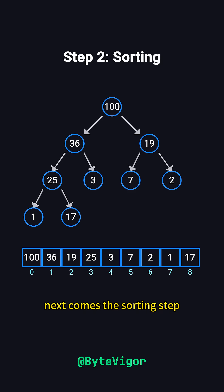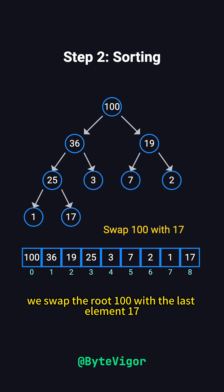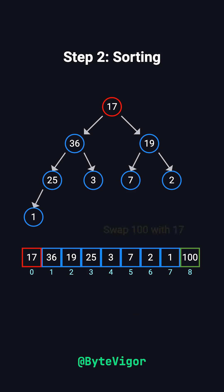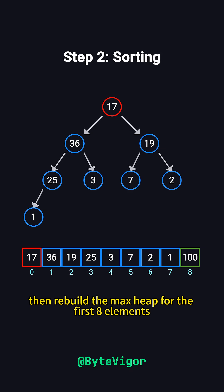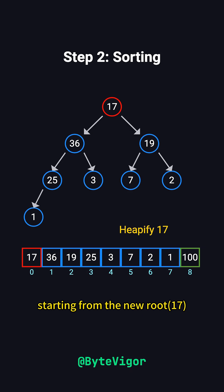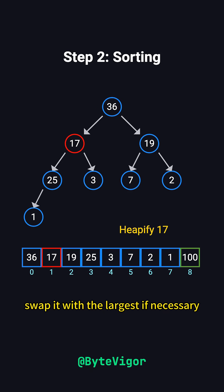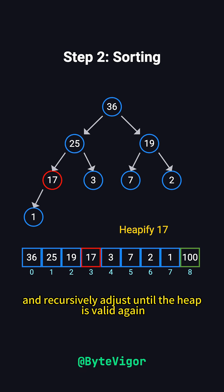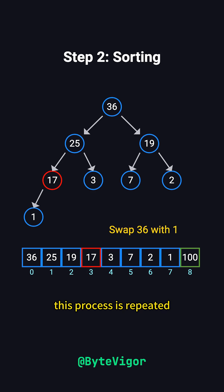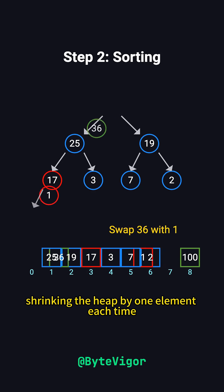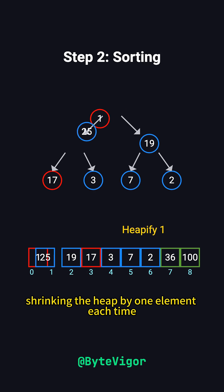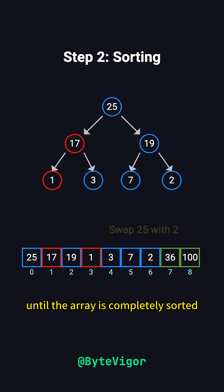Next comes the sorting step. We swap the root, 100, with the last element, 17, then rebuild the max heap for the first eight elements. Starting from the new root, we compare it with its children, swap it with the largest if necessary, and recursively adjust until the heap is valid again. This process is repeated, shrinking the heap by one element each time until the array is completely sorted.